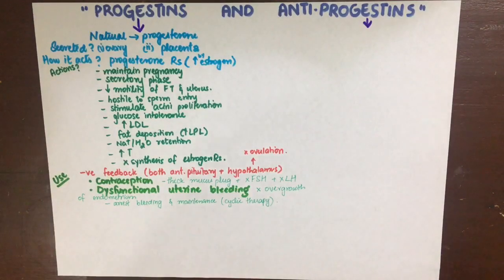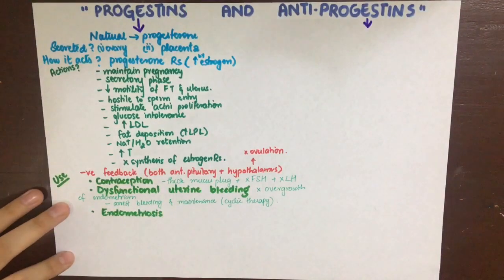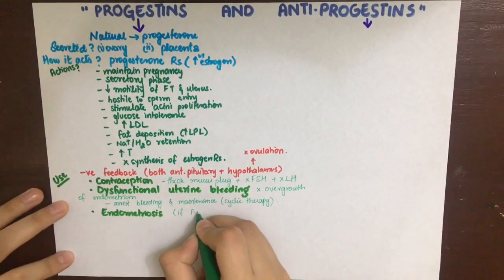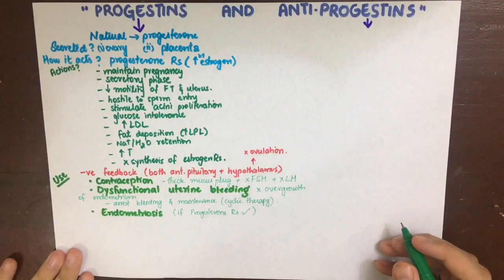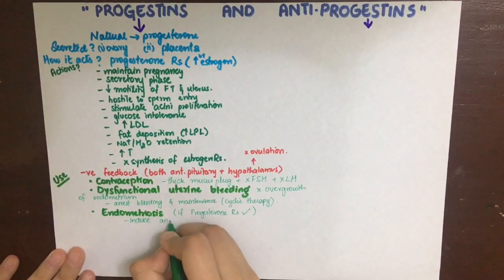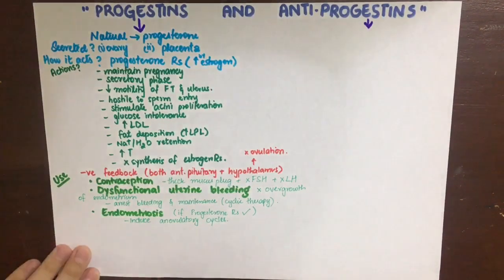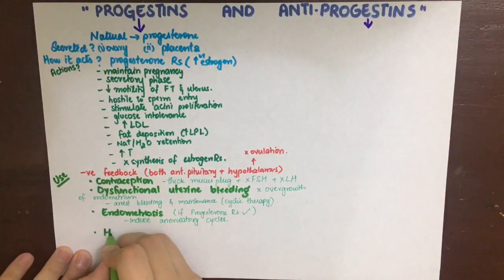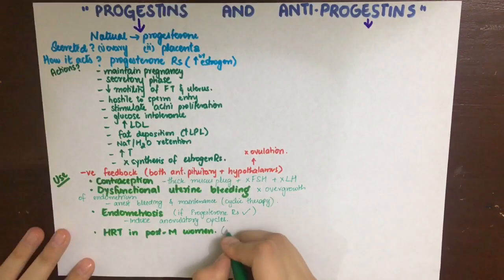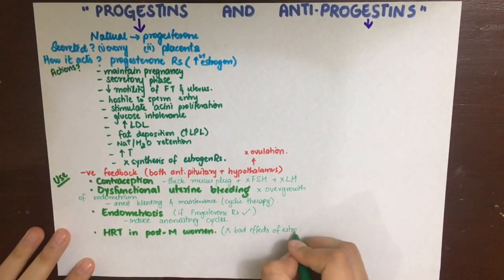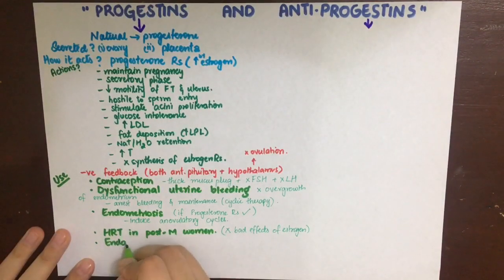Progesterone also finds use in endometriosis, a painful condition in which abnormal endometrium grows outside of the uterus. It is used by inhibiting ovulation and inducing anovulatory cycles. As long as there is progesterone, there is no ovulation, and if there is no ovulation, there is no estrogen-dependent proliferation of the endometrium. Progesterone is also used in hormone replacement therapy in association with estrogen to antagonize side effects of estrogen such as endometrial proliferation, and for the same reason it can be used in endometrial carcinoma.